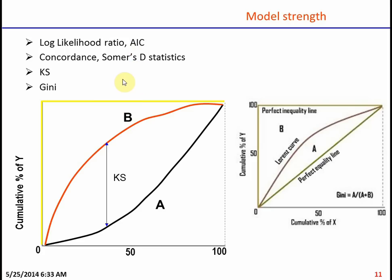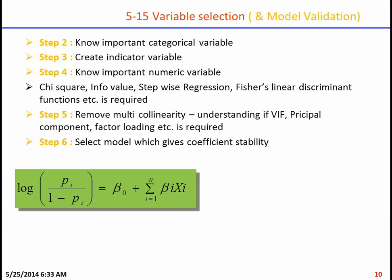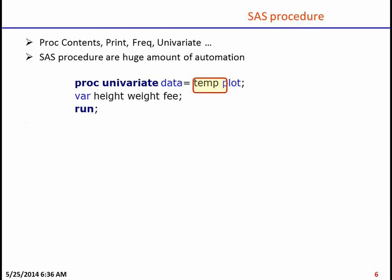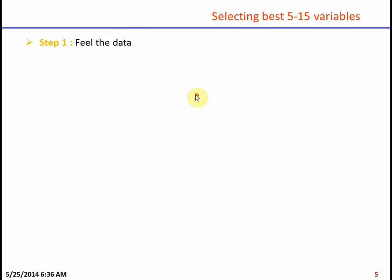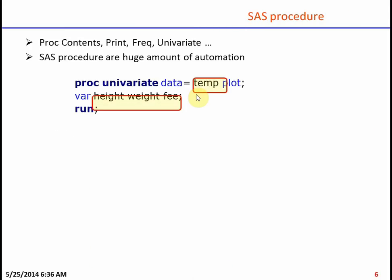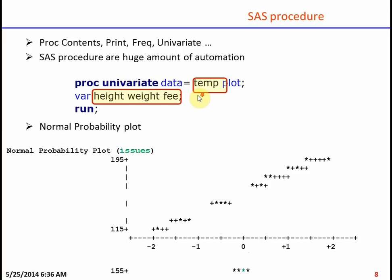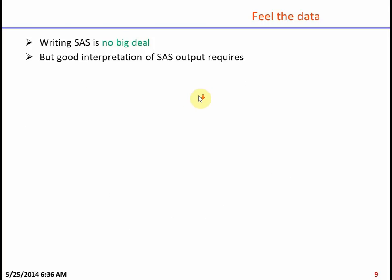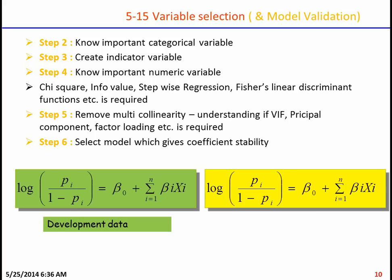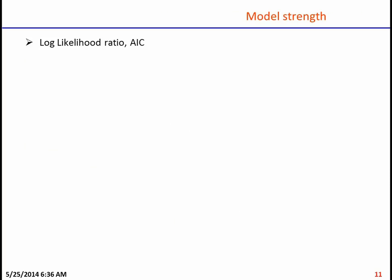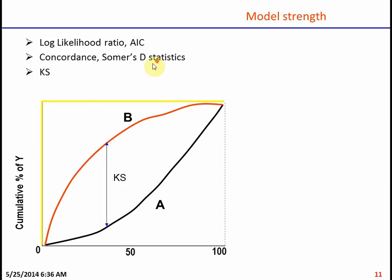So the steps in summary are: first, design the dependent variable and select the performance window; then get a feel of the data and reject poor variables; follow a process to select important categorical and numeric variables; and finally select a final set of 5 to 15 variables that perform best across all these criteria.